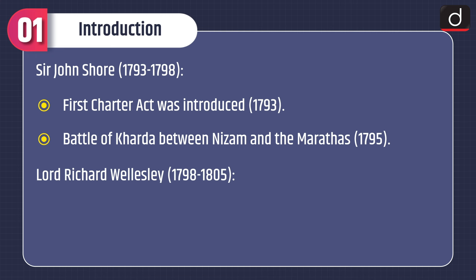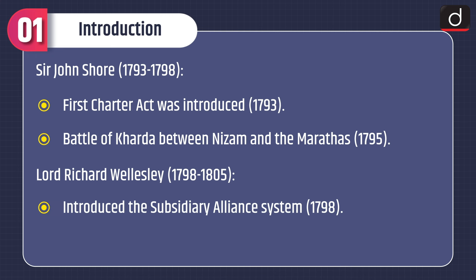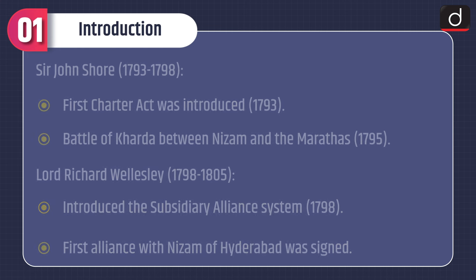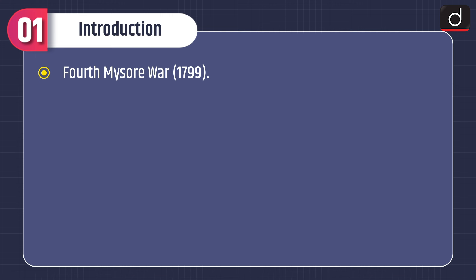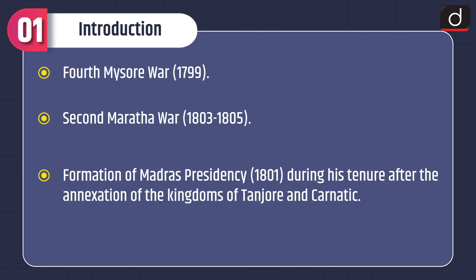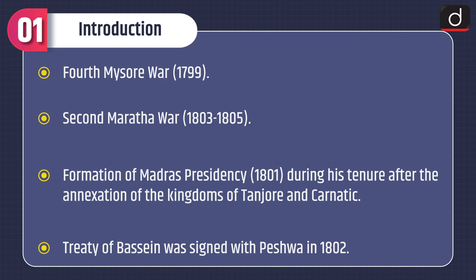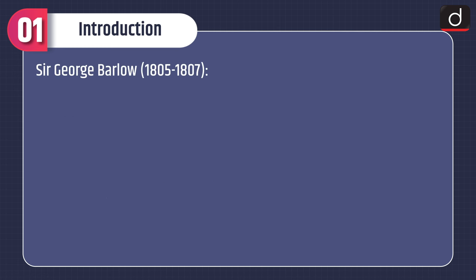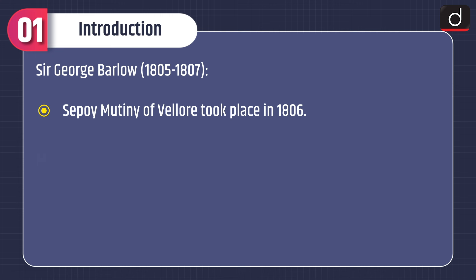Lord Richard Wellesley, 1798–1805: introduced the subsidiary alliance system in 1798. The first alliance was with the Nizam of Hyderabad. The Fourth Mysore War took place in 1799 and the Second Maratha War in 1803–1805. The Madras Presidency was formed in 1801 after annexation of the kingdoms of Tanjore and Carnatic. The Treaty of Bassein was signed with the Peshwa in 1802. Sir George Barlow, 1805–1807: the Sepoy Mutiny of Vellore took place in 1806.